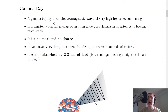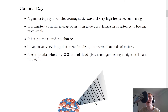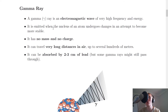Beta particles are absorbed or stopped by two to three millimeters of aluminium. Moving on to the gamma ray: a gamma ray is an electromagnetic wave of very high frequency and energy. You should remember that gamma rays are part of the electromagnetic spectrum, and we can give gamma the symbol of the Greek letter gamma. It's emitted when the nucleus of an atom undergoes changes in an attempt to become more stable.